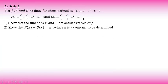Activity number 1: we have 3 functions — small f, capital F, and g(x) — defined as given. Part 1: Show that capital F and g are antiderivatives of small f, meaning we take the derivative of each and verify it equals small f(x). Part 2: Show that F(x) − g(x) = k, where k is a constant to be determined.